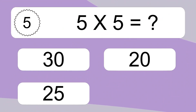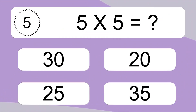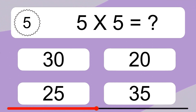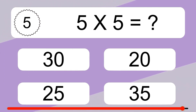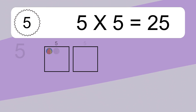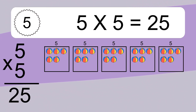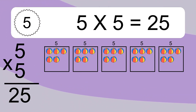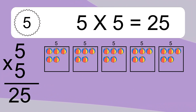5 times 5 equals what? 5 times 5 equals 25. We have 5 boxes, and each box has 5 colorful balls inside. If you count all the balls in all the boxes together, you will have 5 times 5 balls. This equals 25 balls.